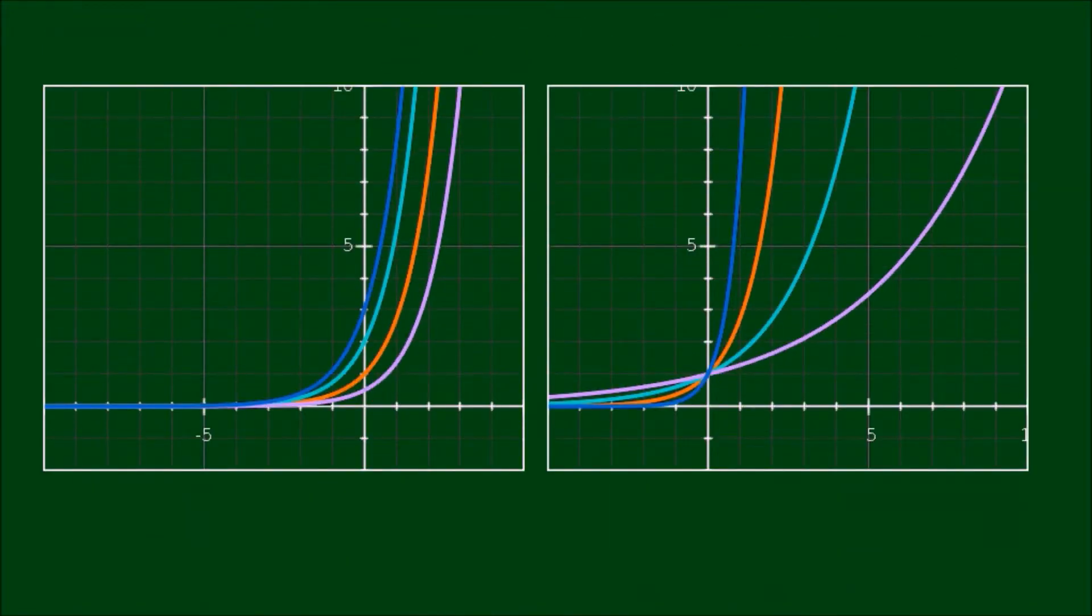I have a couple of graphs here to demonstrate how this class of solutions work. On the left hand graph, we have graphs where we keep the growth factor k constant. So we choose k equals 1, so we have y equals A times e to the x.